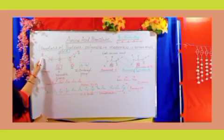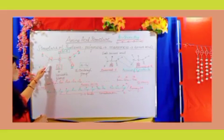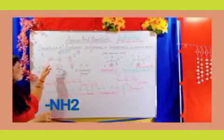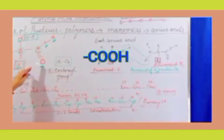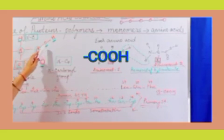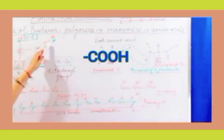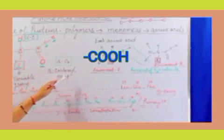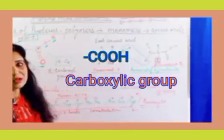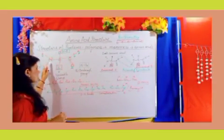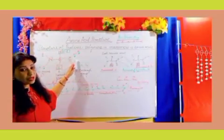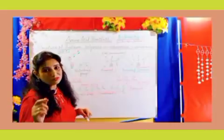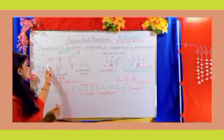On one end, nitrogen is bonded with two hydrogens — that is the NH2 group, which we call the amino group. The other end has a central carbon atom double-bonded with oxygen and also bonded with an OH group — that is the COOH or carboxyl group. So in each amino acid, one side has the amino group and the other side has the carboxyl group.